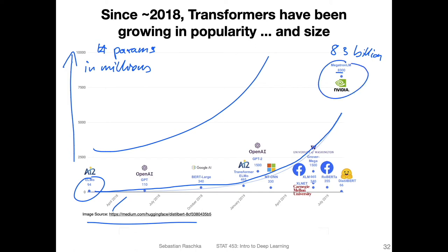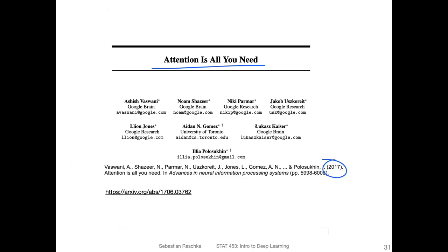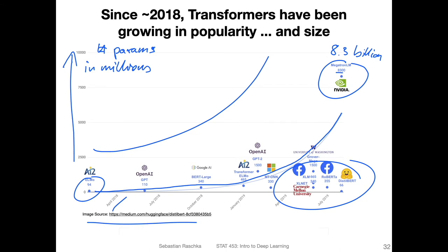Of course, training 8.3 billion parameters is not feasible for a normal human being. Nowadays there are also research groups focusing on developing smaller transformer models. In any case, this just shows the big picture — transformer models are interesting and there are many different flavors. We are talking about the foundational 'Attention Is All You Need' paper. Later I will briefly talk about GPT-2 and the BERT model, which are also foundational models using self-supervised learning techniques adopted by other transformers.